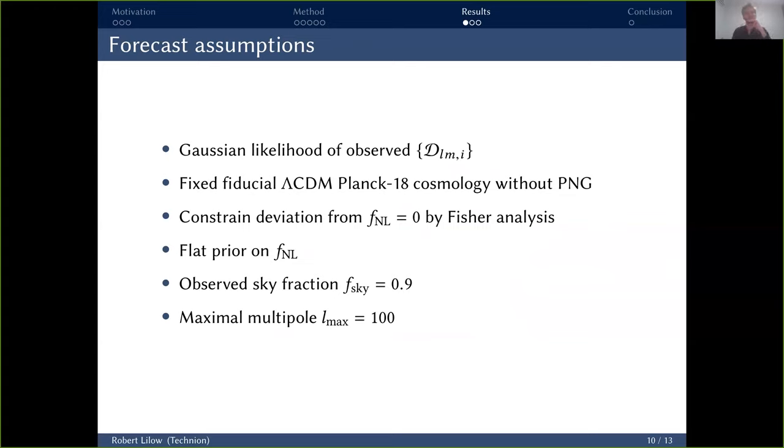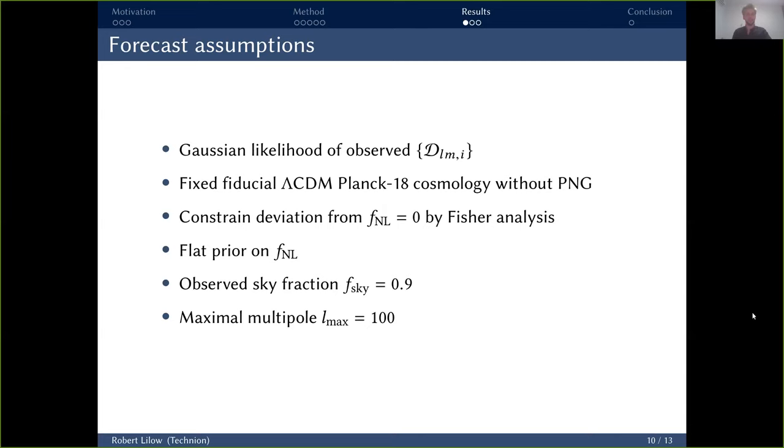Now, before I show you results, these are all the assumptions that go into the forecast analysis that we're doing. First of all, we assume that the observed set of dispersion measure modes L and M for different bins i, for a given value of f_NL, follows a Gaussian likelihood. Then we use a fixed fiducial lambda CDM cosmology without PNG, using the cosmological parameters of the latest Planck results. Then the deviation from this fiducial model, so the deviation from f_NL equal to zero, is constrained by Fisher analysis. The prior we assume on f_NL is flat. We also account for an observed sky fraction of 0.1, so take into account that perhaps there will be some obstruction by the galactic disk. And we only consider multipoles up to L of 100, because anything beyond this has only negligible contributions from the PNG just because the scales become too small.